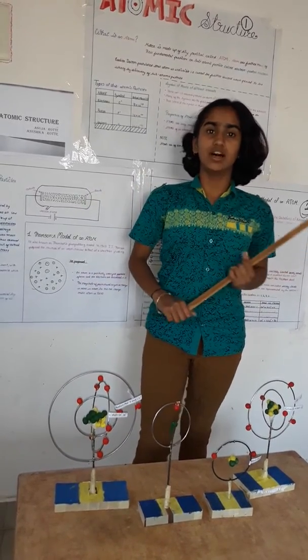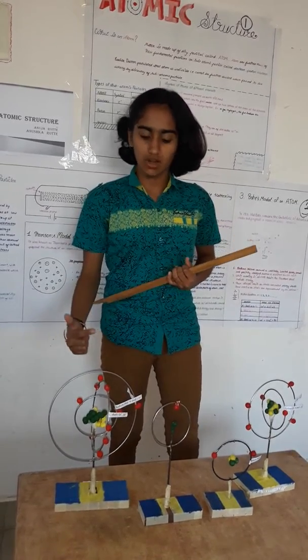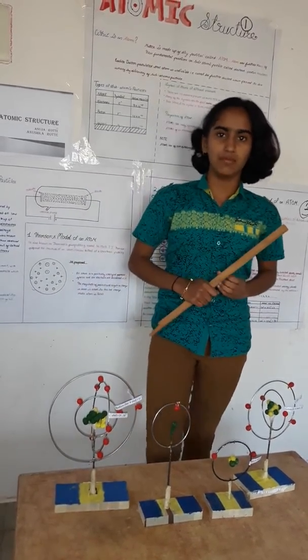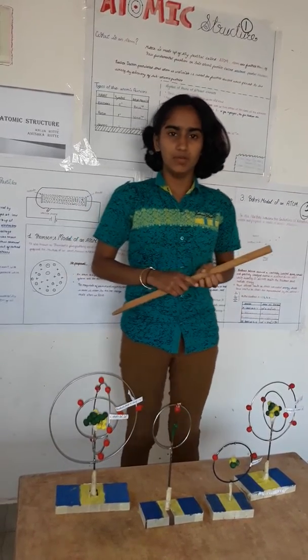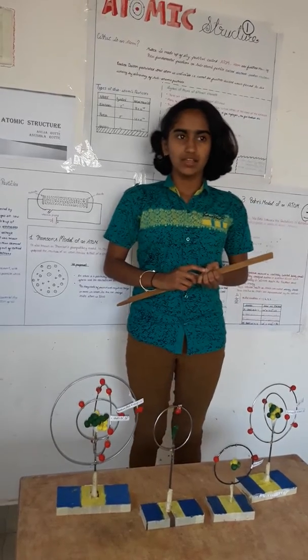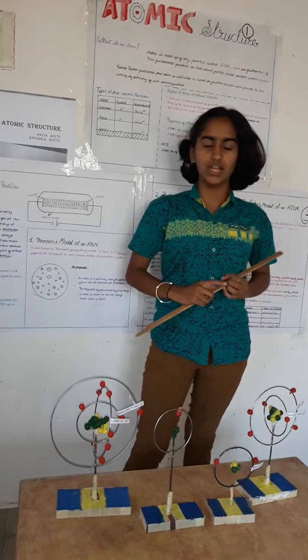Now about orbitals. A space around nucleus having probability of finding electron at maximum is called orbitals. Examples of orbitals are Px, Py, Pz, Dx square, Dy square, Dz square.